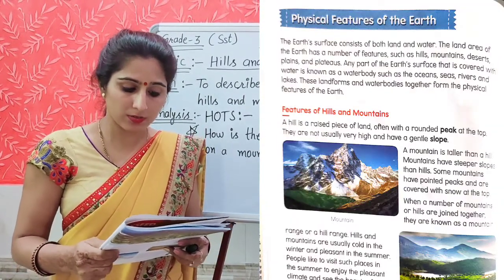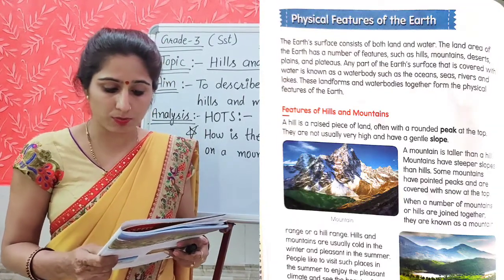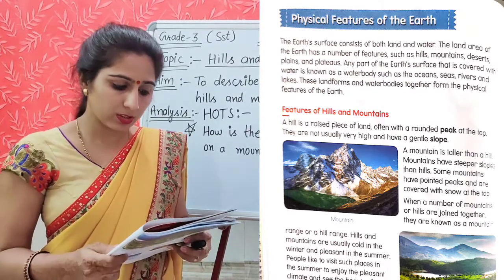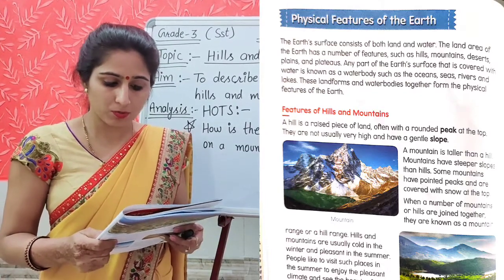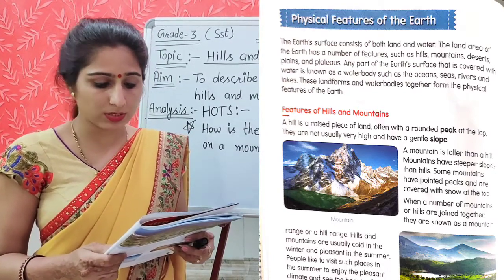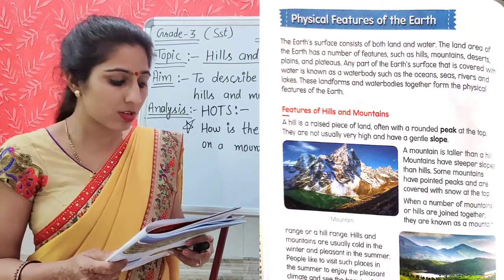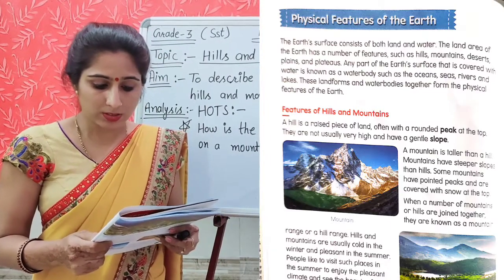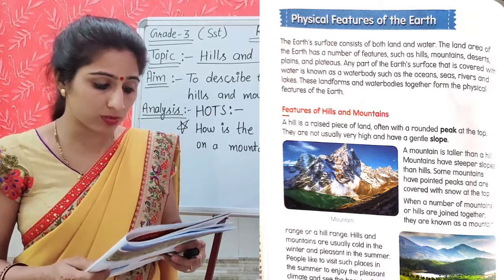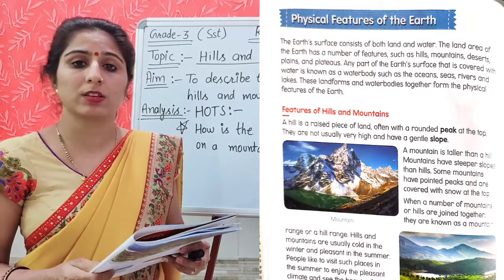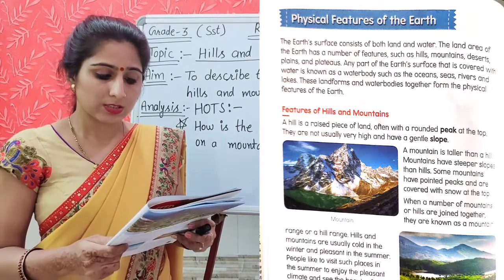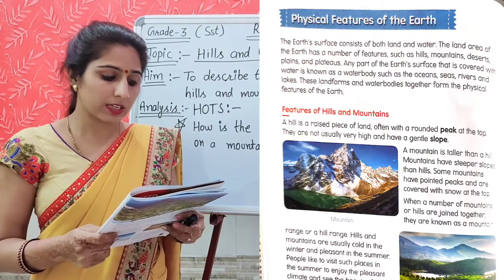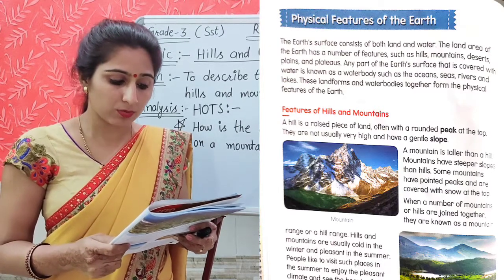Now go to the reading section — open page number 8 of your content book. Physical Features of the Earth: The earth's surface consists of both land and water. The land area of the earth has a number of features such as hills, mountains, deserts, plains, and plateaus.